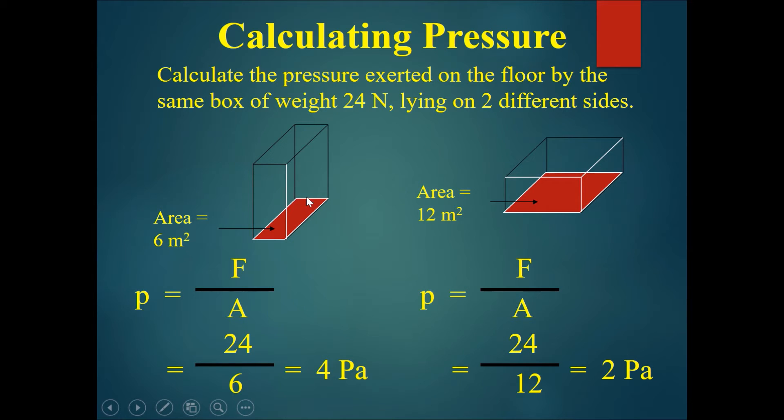When it's standing upright, the area that it touches the ground or its base area becomes lesser. So the pressure will be the force or the weight pressing down on the area, which would be 24 divided by 6, giving you 4 pascals of pressure.